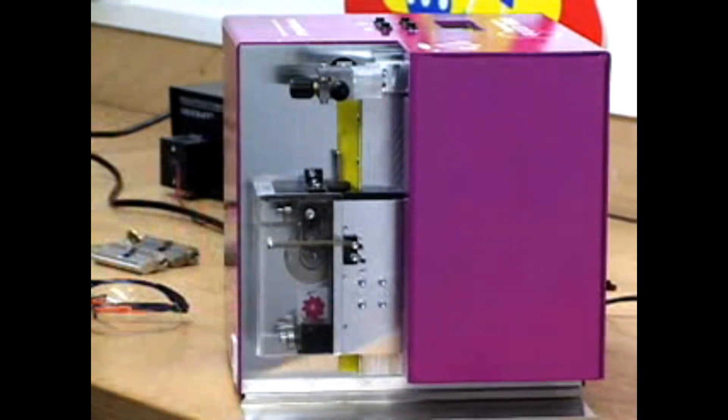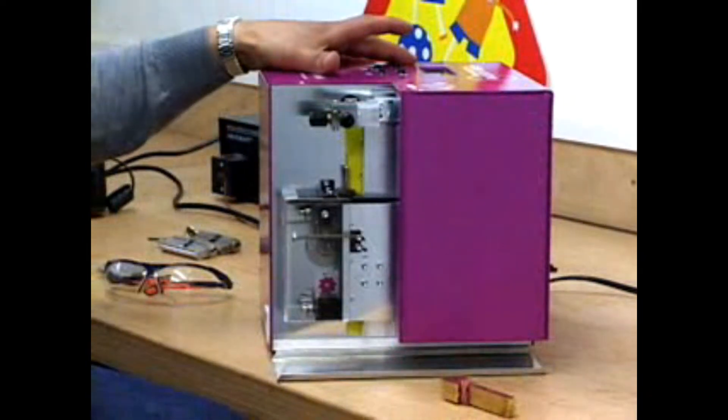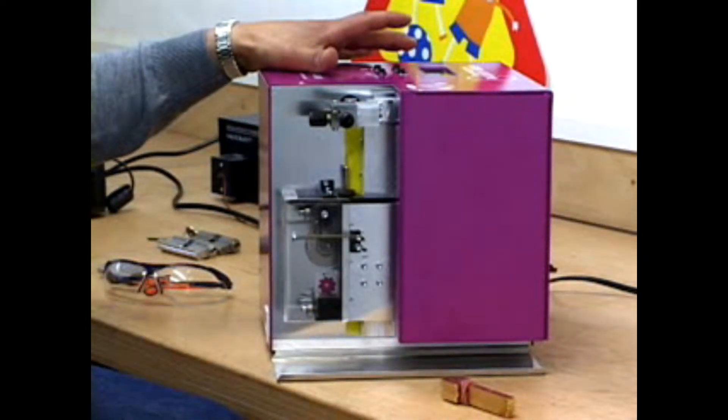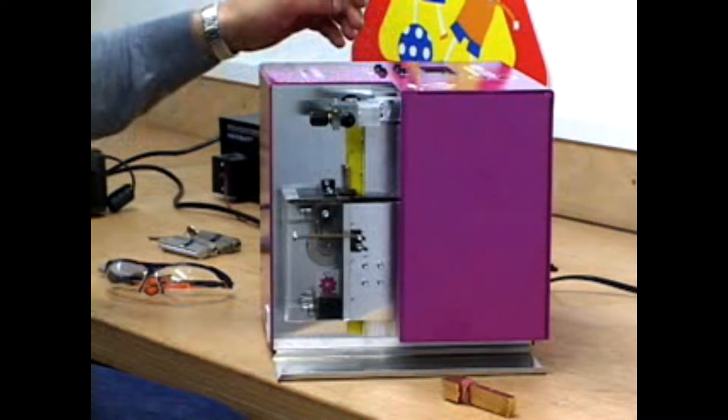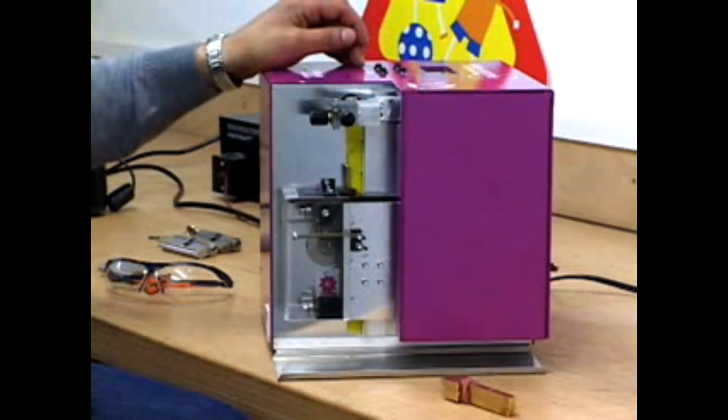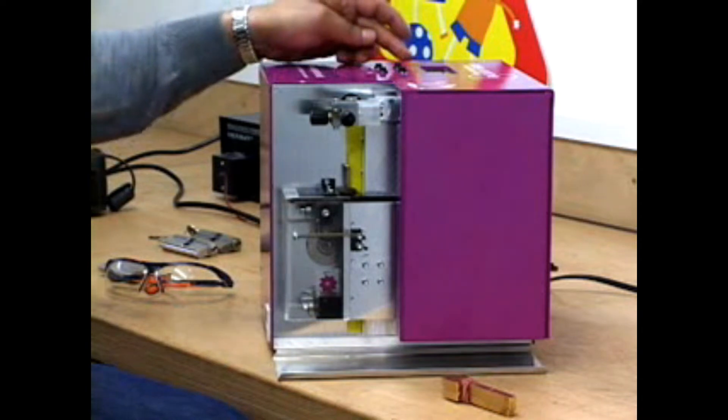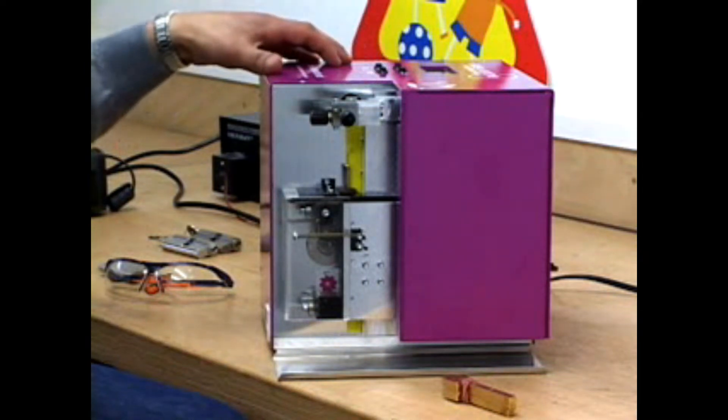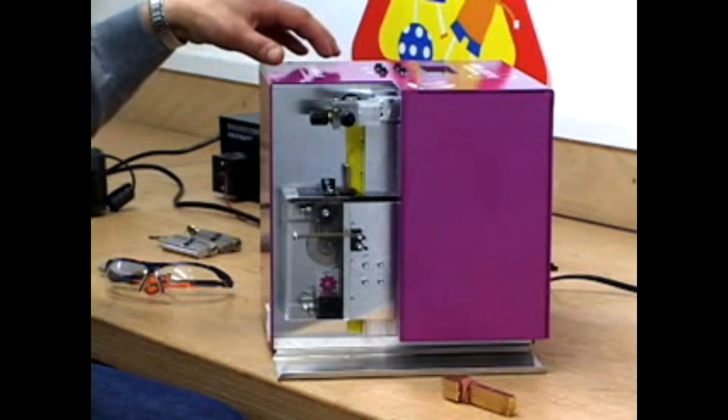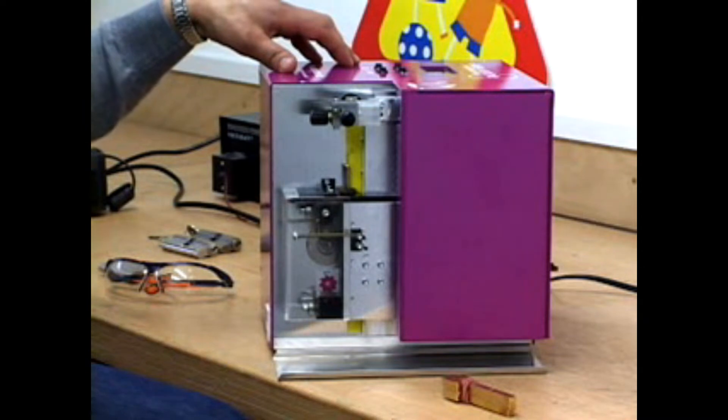I start the machine. It has options. You can choose two languages, German or English. Now there is no key blank inside and it has two different functions. One is the normal function and the second is for special functions. Now we use the normal function.